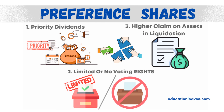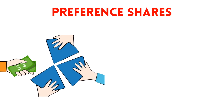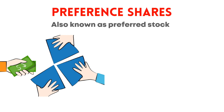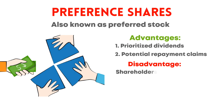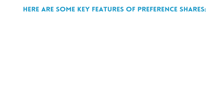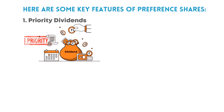The second type is preference shares. Preference shares are a special class of stock that offers certain advantages such as prioritized dividends and potential repayment claims, but shareholders do not have voting rights. Key feature one: priority dividends — preference shareholders receive dividends before common shareholders if a company declares them. The dividend amount is usually fixed, but some preference shares have dividends that can fluctuate.